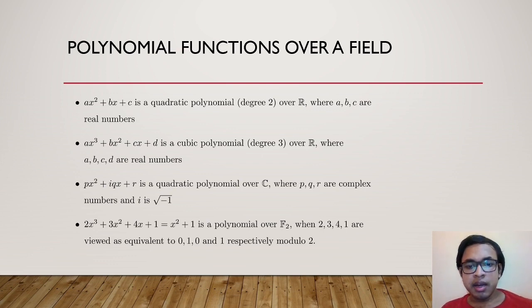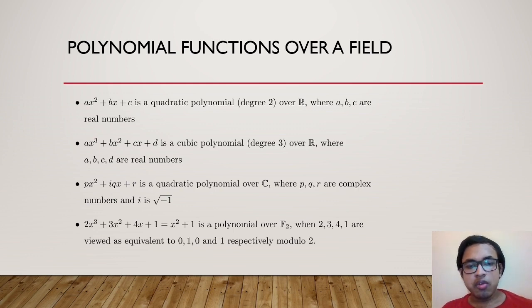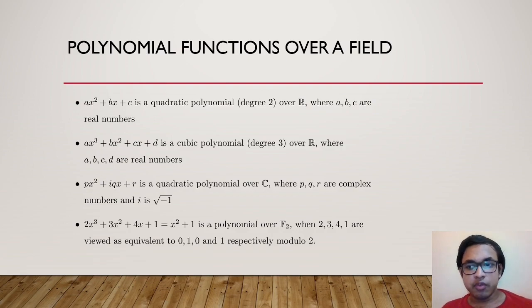Consider the finite field F₂ (modulo 2). The polynomial 2x³+3x²+4x+1 in this field is the same as x²+1, because 2≡0, 3≡1, 4≡0, and 1≡1 (mod 2). So 2, 3, 4, and 1 are equivalent to 0, 1, 0, and 1 respectively modulo 2. That is why these two polynomials are the same over F₂.